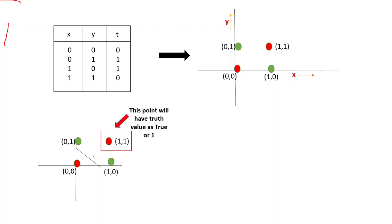So this way you cannot divide or you cannot use a single line to separate the greens from the red. And if you try this way, again this point will be supposed to have a truth value of 1, where in reality this has a truth value of 0.